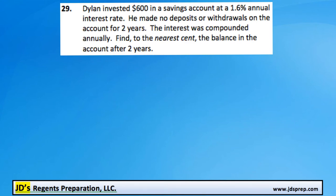This is problem number 29 from the June 2015 Algebra Regents exam. Dylan invested $600 into a savings account at a 1.6% annual interest rate.